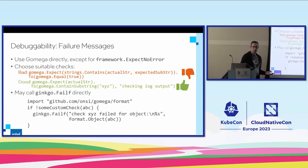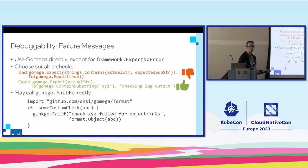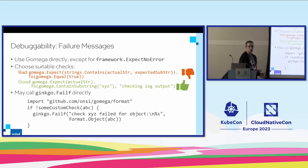There are probably cases where there is no suitable Gomega assertion. You could write a custom matcher — that's part of Gomega's design and may be the right choice, but it's also a bit complicated. For one-time things you may do a check in Go, but then it's your responsibility to have a GinkgoFailF message that is informative and really prints something useful.